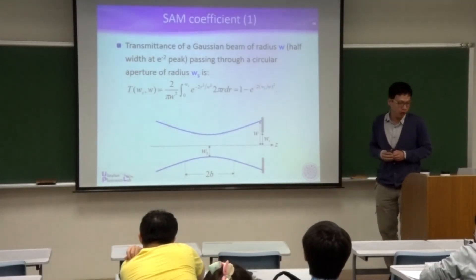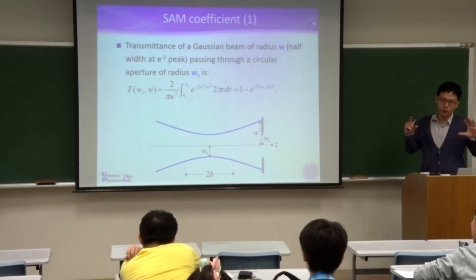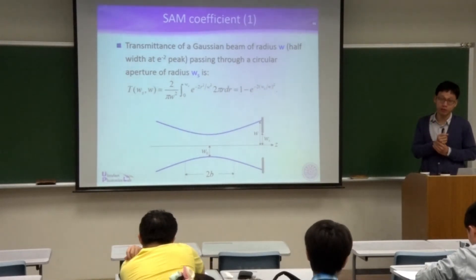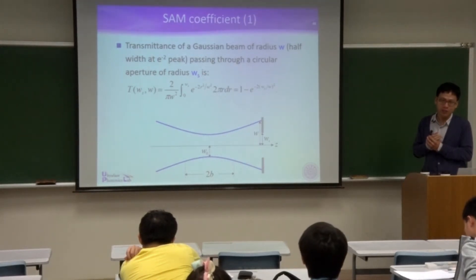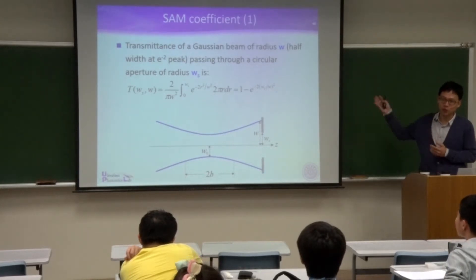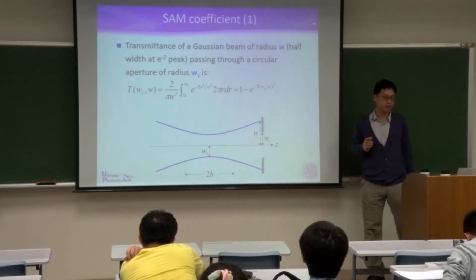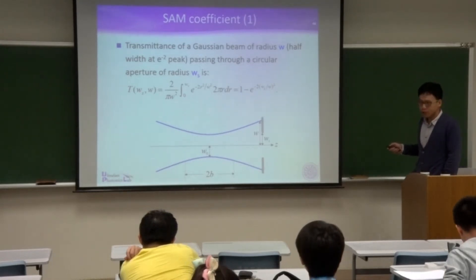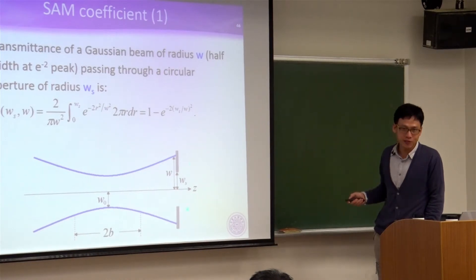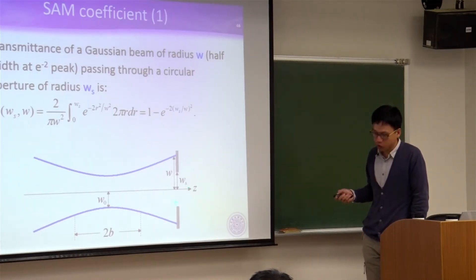So we know how to calculate the SPM coefficient delta. Reviewing the master equation, there is a parameter delta — now for a real Kerr-lens mode-locked Ti:sapphire laser, you know how to get the delta number according to this model. The other parameter we need is the SAM coefficient, which is a bit more complicated. SAM comes from the iris — the aperture — as introduced in the schematic diagram.